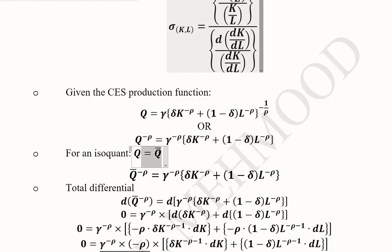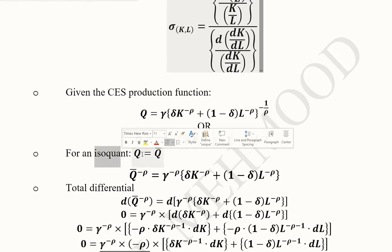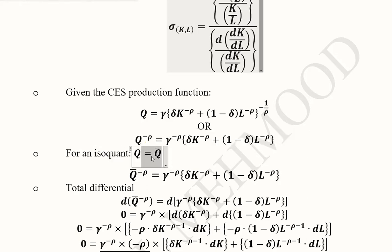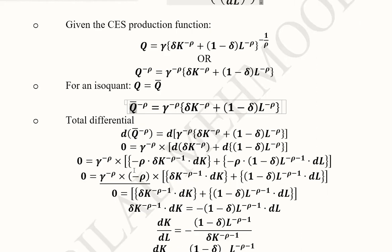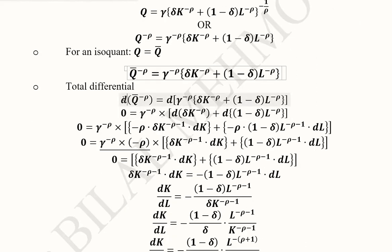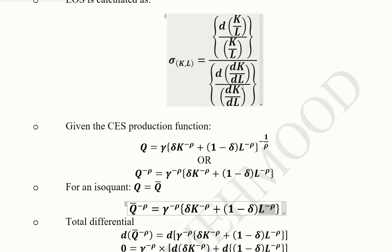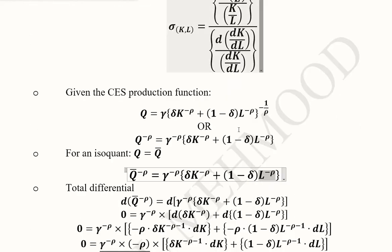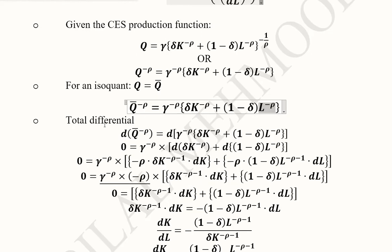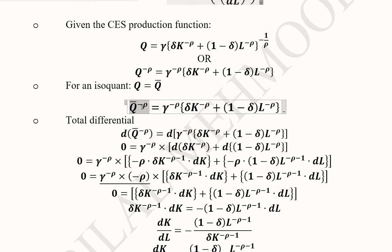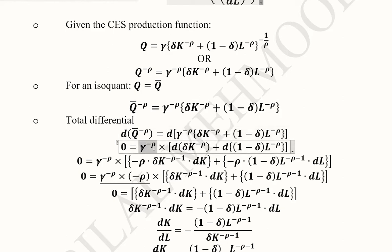The first assumption is that if we are on an isoquant, the output would be constant. When we make this assumption on Q, we write a bar because now we are on an isoquant. We take the total differential because we know it will allow us to calculate the dK/dL term which is required for this formula. The total differential on the left-hand side will be zero because output is now considered constant. On the right-hand side we are taking the differential. This is not a variable term, so it comes out as a constant and the remaining is here.